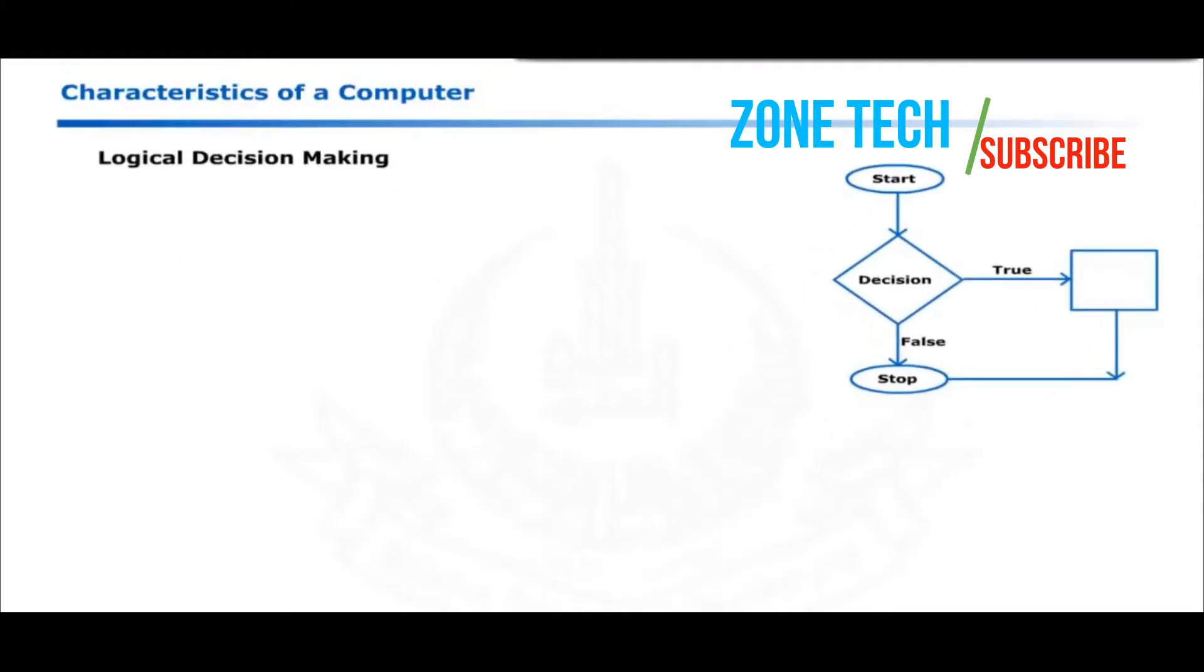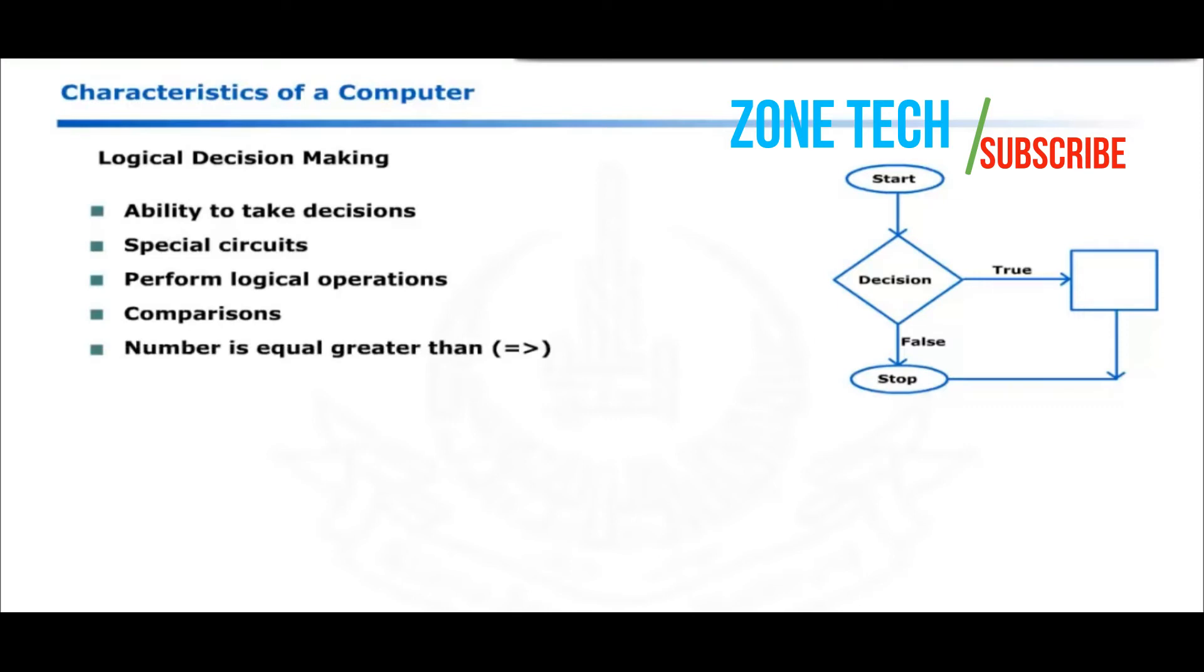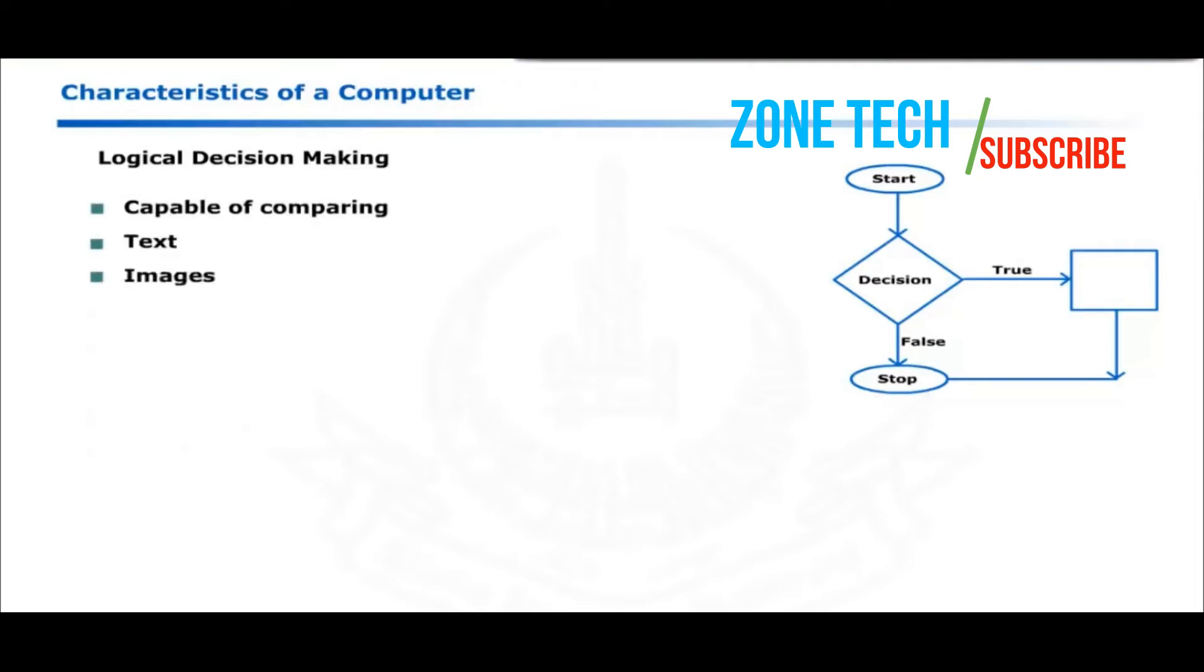Apart from computations, a computer has the ability to take decisions. The computer has special circuits to perform logical operations. Logical operations include comparisons such as a number is equal to, greater than or less than another number. Depending upon the results of logical operations, a computer can take appropriate actions. Computer is also capable of comparing text, images and even audio. The decision-making capabilities of computer has led to the invention of artificial intelligent machines.